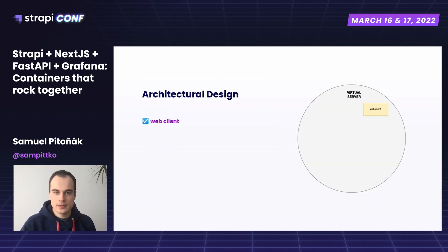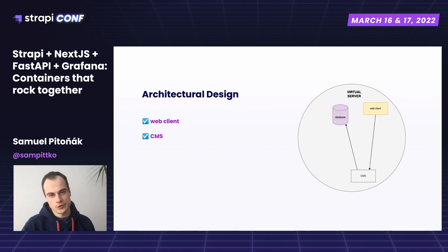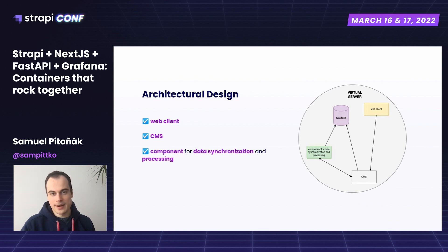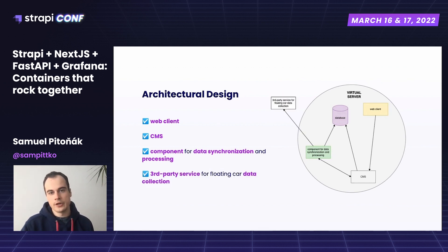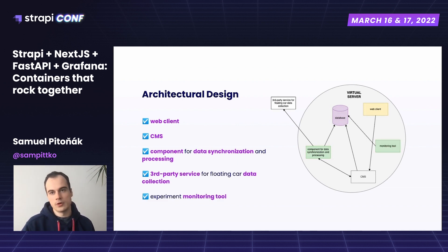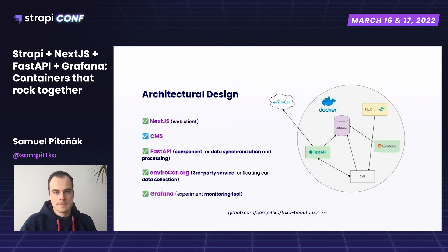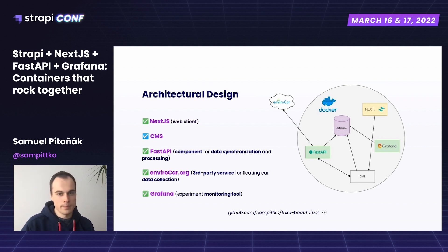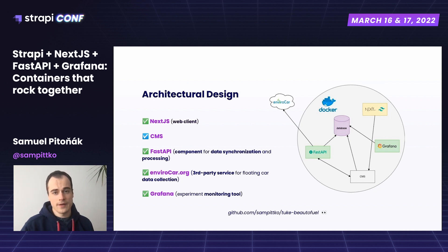When it comes to the architecture, there is a web client talking to the CMS that stores all the data around the experiment. There is also a component for data sync and processing with a third party, used to collect driving data, and a monitoring tool to oversee the experiment. Technologies chosen were Next.js for the front-end, Strapi as the CMS, FastAPI as the Python data processing pipeline framework, Envirocar for data collection, and Grafana as the monitoring tool.